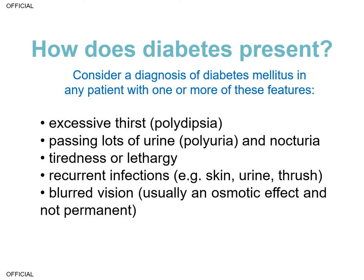A classic symptom is also nocturia, and in young children it's worth noting that recurrent bed wetting is something you can consider. Polyuria and polydipsia are classic symptoms of high blood sugar, but quite often diabetes might present more insidiously with tiredness or lethargy, and can if rapid onset cause weight loss. It can also present with recurrent infections such as thrush, skin infections, or commonly urine infection, and some individuals may also complain of blurred vision.